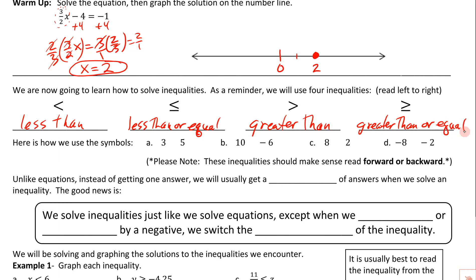So: greater than or equal, greater than, less than or equal, and less than. We're going to place these symbols in these little expressions. 3 and 5 — that's going to be a less than. 10 and negative 6 — some people make the symbol look like a 7, so don't do that. 10 is bigger, so we want the big mouth toward 10 and the small point toward the smaller one.